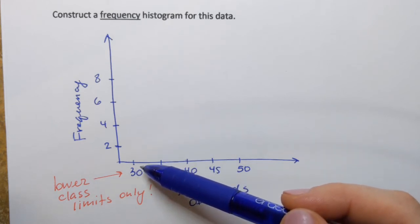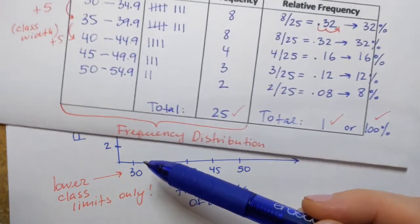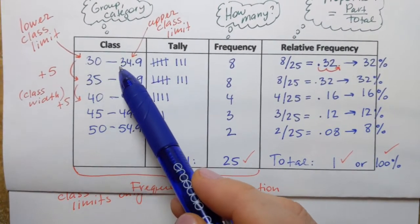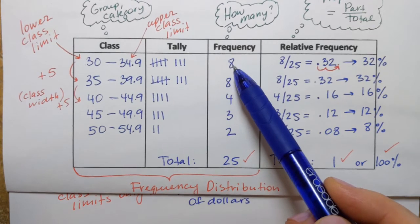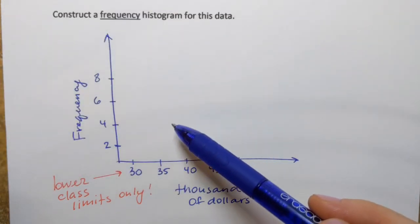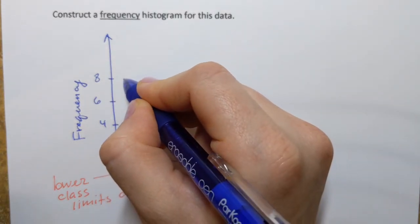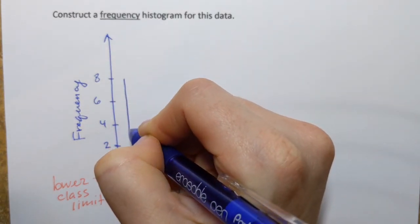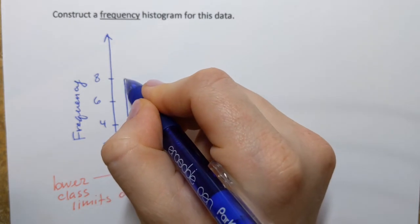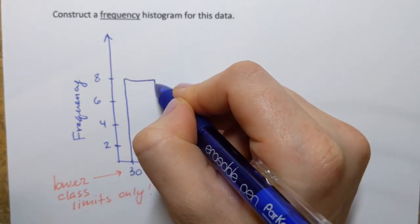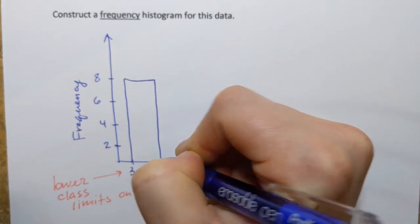So if I take the first class let me go back to the table so I can see that the first class from 30 to 34.9 has frequency 8. That means that I'm going to construct a vertical bar. It's like a rectangle basically between 30 and 35 that has height 8 units in this manner.